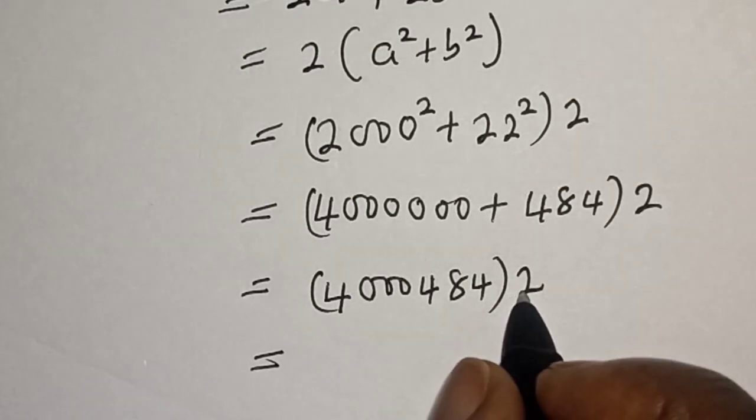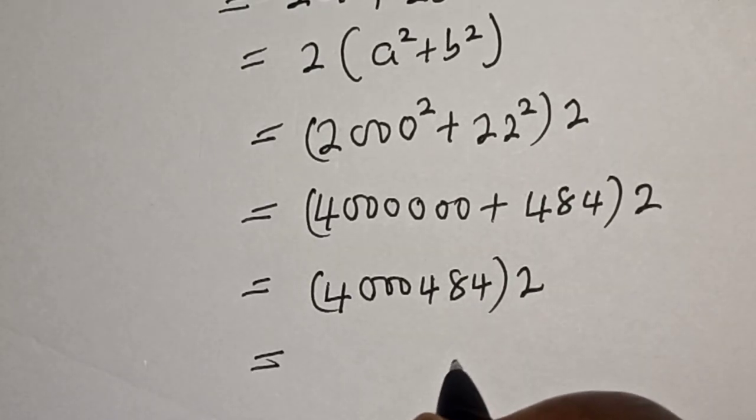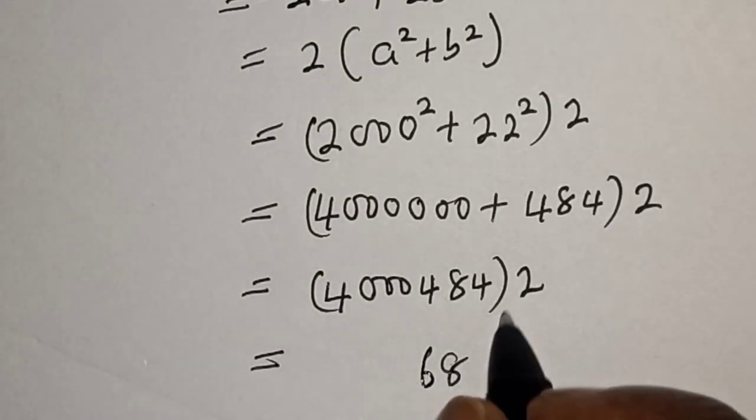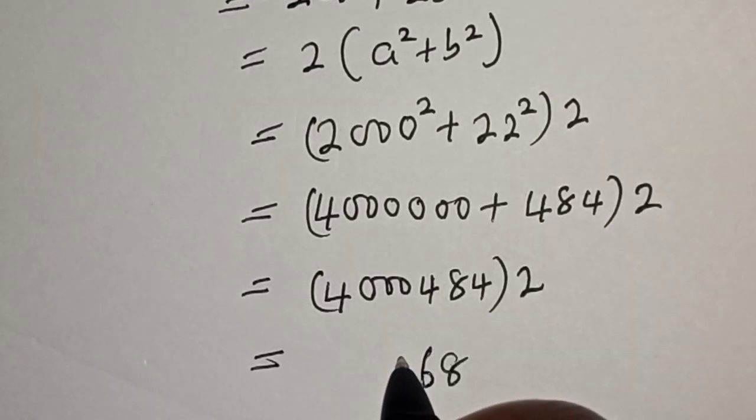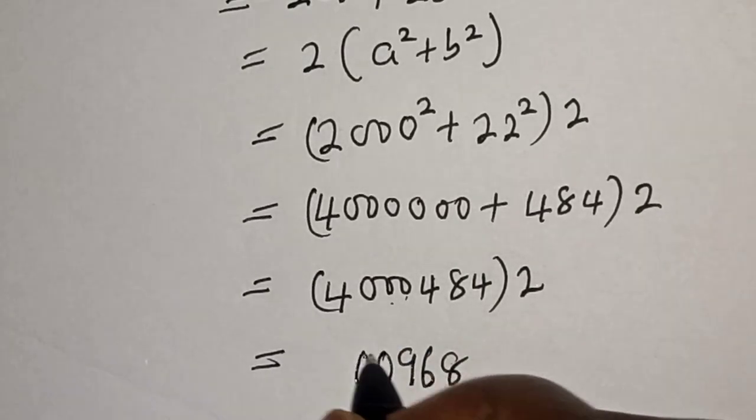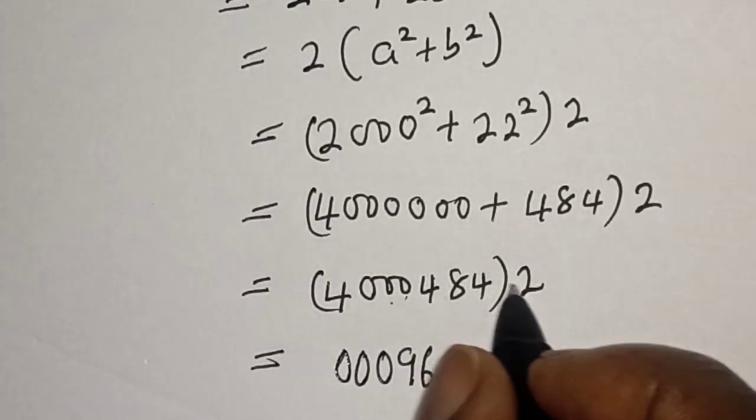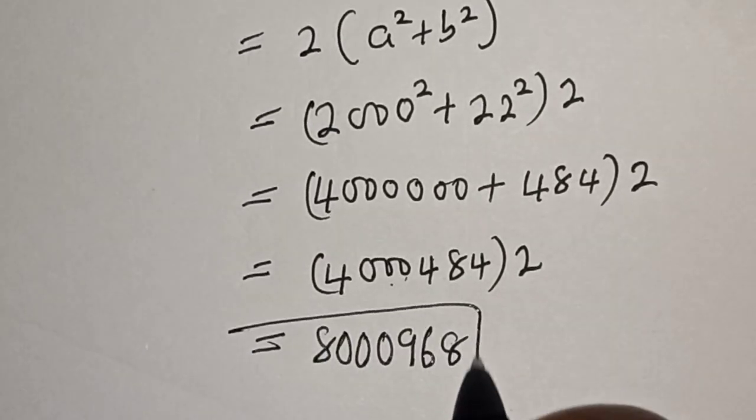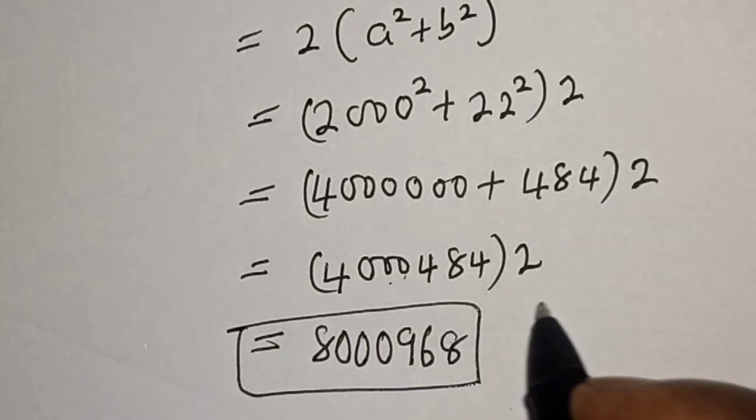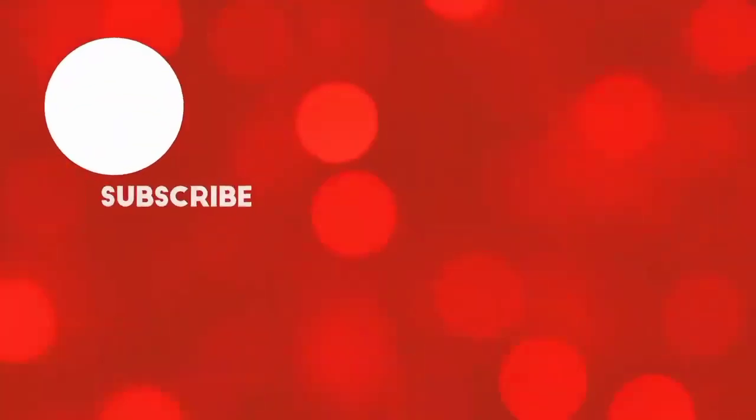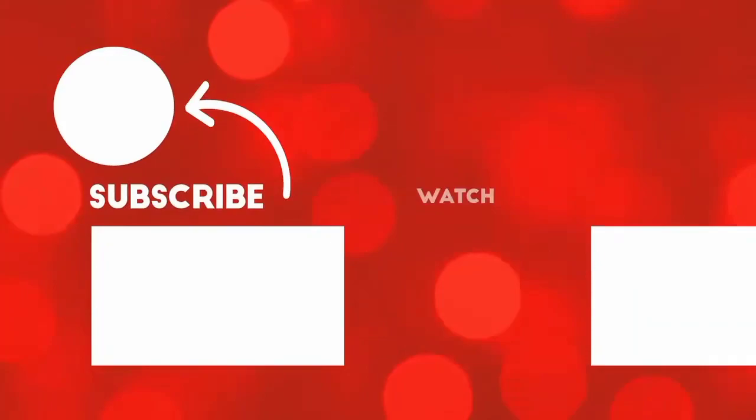If you multiply all of this by 2 we have: 2 × 4 = 8, 2 × 8 = 16 (carry 1), 2 × 4 + 1 = 9, 2 × 0 = 0, 2 × 0 = 0, 2 × 0 = 0, 2 × 4 = 8. Then this is the final answer: 8,000,968. Before you leave, like, share, comment and subscribe. Thank you, bye bye.